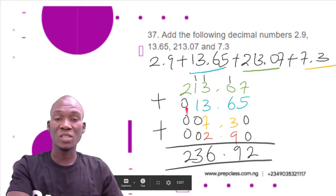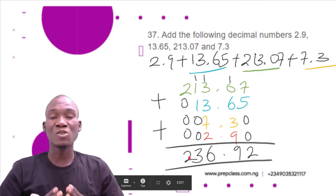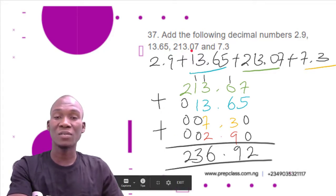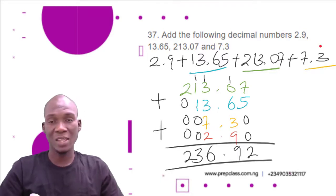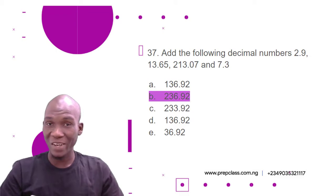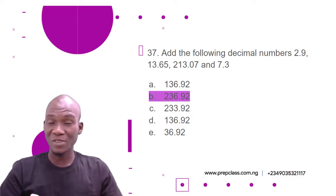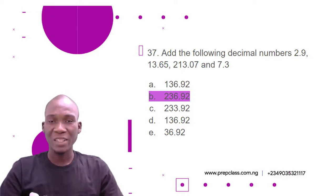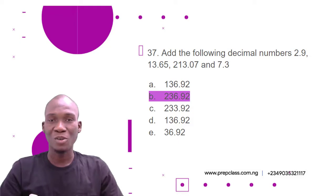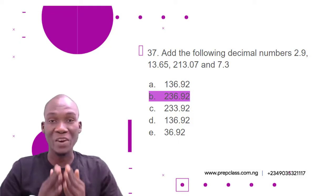The final result is 236.92, which is the sum of 213.07, 13.65, 7.3, and 2.9. The correct option is B, 236.92. To add decimal numbers, align the decimal points directly under each other, then balance the number of digits with zeros to make addition straightforward.